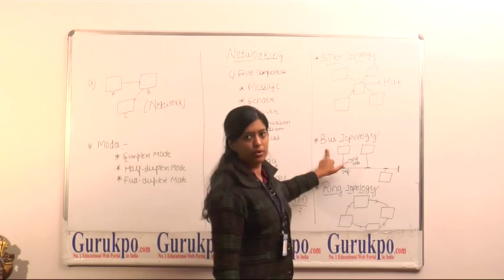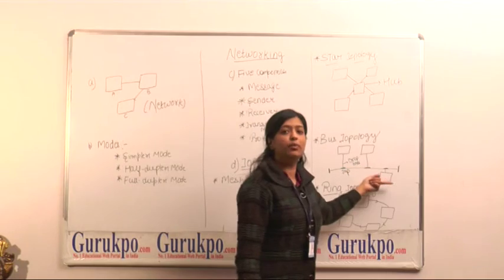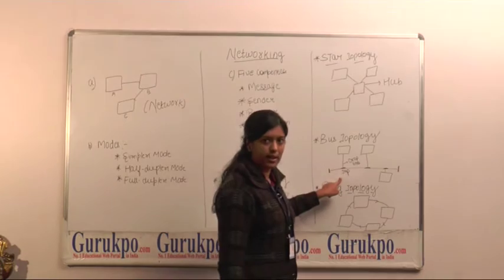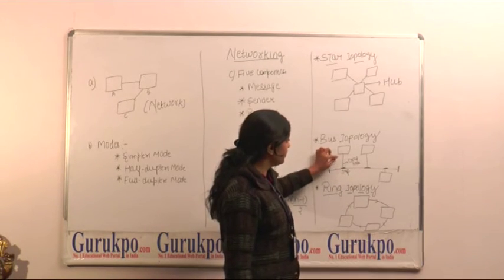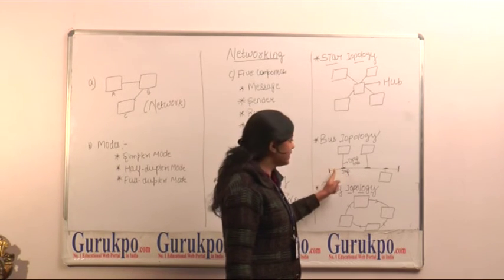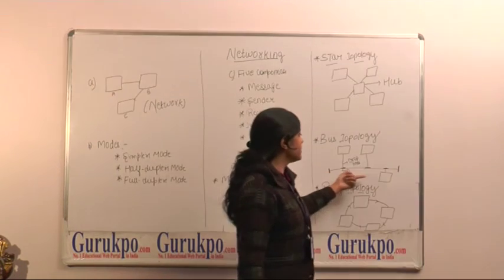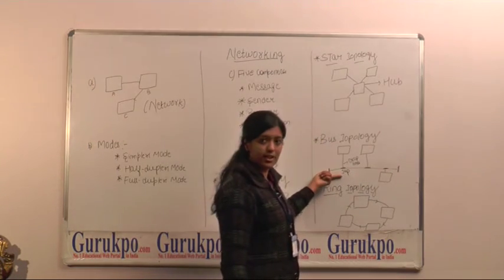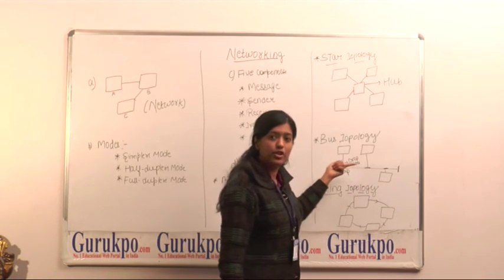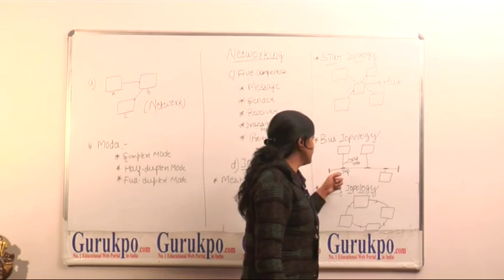The third one is bus topology. In bus topology, there is a common link through which all the other devices are connected. There are two components: drop lines and the tap. The drop line is the link between our system and the common link, and the tap is just the connector. The advantage is a common shared link. The disadvantage is that as the signal travels more and more, the signal energy is transformed into heat, so the signal becomes weaker.